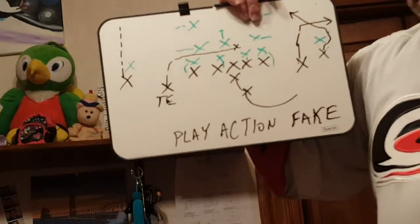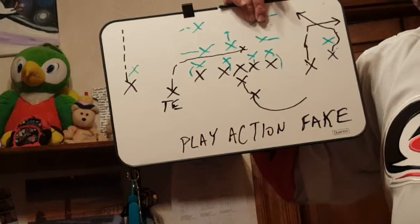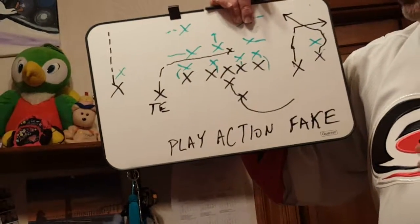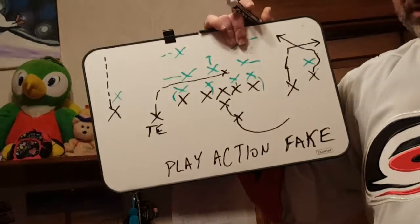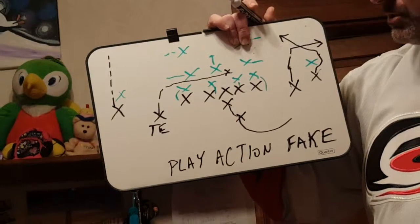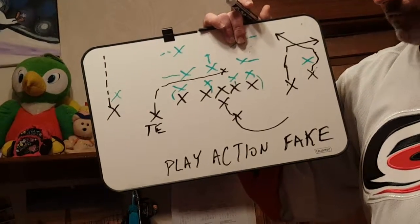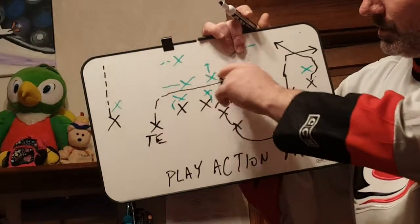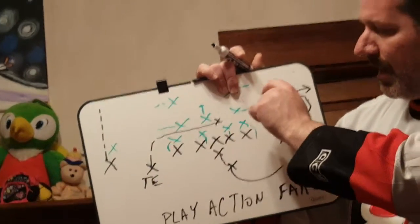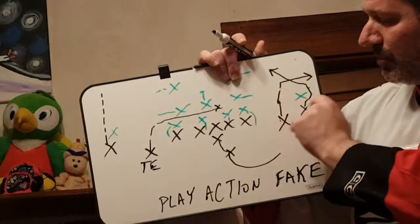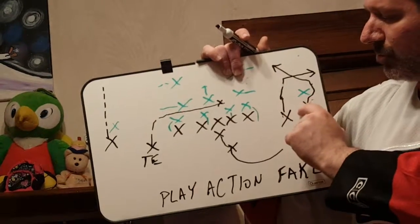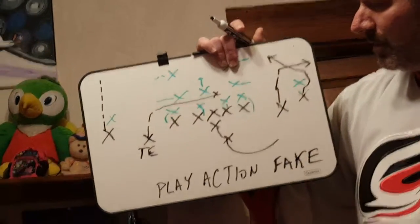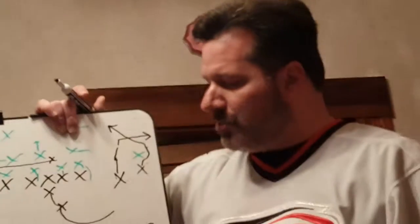Usually, a lot of these plays would call for a nickel package, where they'd come in with a fifth defensive back, take out one of the linebackers, and have them sit over here to help cover those two receivers. Alrighty, I hope you liked the description of a play-action fake.